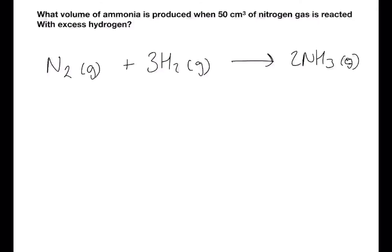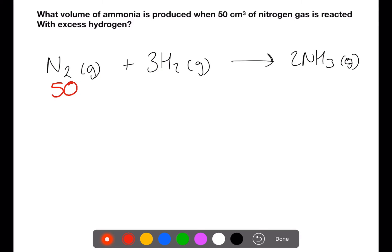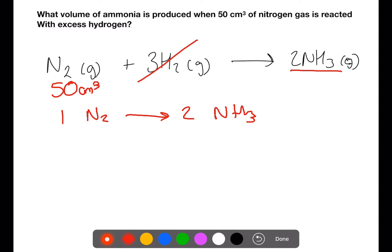In this first example we have 50 centimetres cubed of nitrogen. This is reacting with excess hydrogen and we're trying to calculate the volume of ammonia produced. We can see from the equation that one mole of nitrogen will produce two moles of ammonia. Using the gases in just the same way, 50 centimetres cubed of nitrogen will produce 100 centimetres cubed of ammonia.